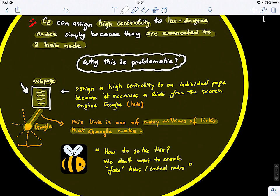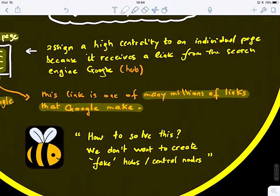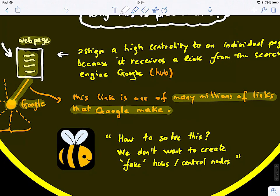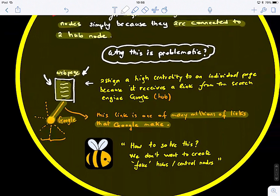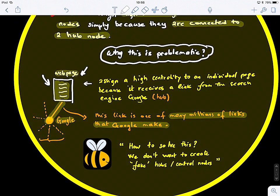Then because of that connection, if we use eigencentrality, this webpage will have a very high centrality because it is connected to a hub, right? There is a link from Google to that webpage. So, this is really problematic. Now, how to solve this? We don't want to create, basically, fake hubs or central nodes like this one. We know that this webpage might not be very important. Google is important, but we want to solve this problem.